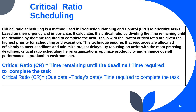Critical ratio scheduling in PPC is a method used to prioritize tasks based on their urgency and importance in relation to project deadlines. It calculates the critical ratio by dividing the time remaining until the deadline by the time required to complete the task. Tasks with lower critical ratios are given higher priority for scheduling and execution, ensuring that resources are allocated efficiently to meet deadlines and minimize project delays. Critical ratio scheduling helps managers focus on tasks most critical to the project's success, allowing for better utilization of resources and improved overall project performance. By incorporating critical ratio scheduling into PPC strategies, organizations can enhance productivity, streamline workflows, and achieve timely project delivery.